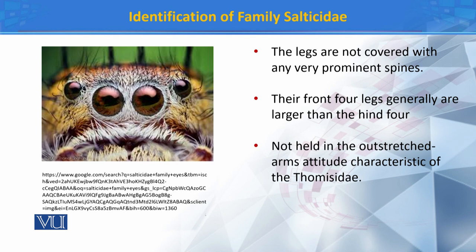This character differentiates the Salticidae family from the Thomisidae family. The front legs of Salticidae spiders are comparatively larger in size, while the posterior legs are comparatively smaller. Additionally, the legs of Salticidae are not outstretched from the body, whereas the legs of Thomisidae are outstretched.